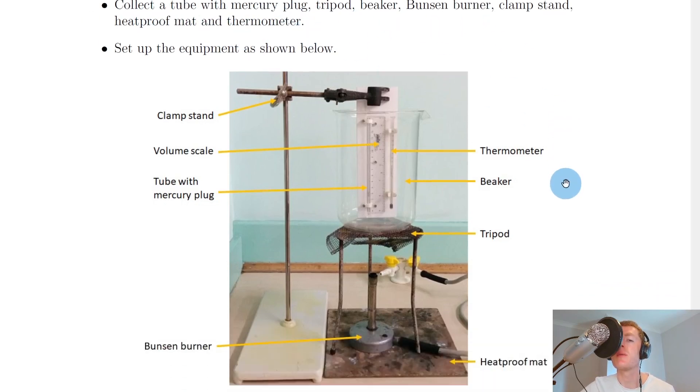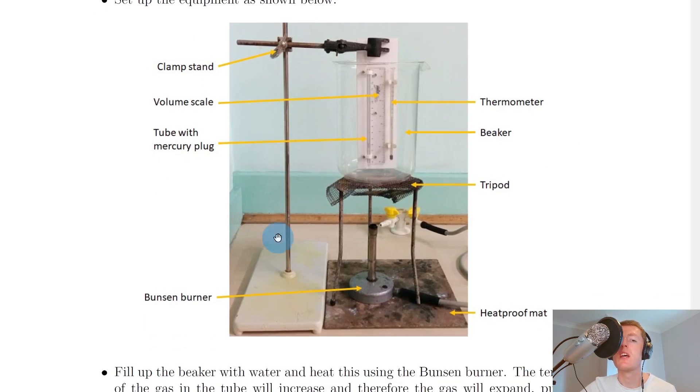You would set up the equipment as shown in this picture. The clamp stand holds this piece of plastic attached to a ruler, your volume scale, and also a thermometer. You've also got this thin tube next to the ruler which has a mercury plug in it.